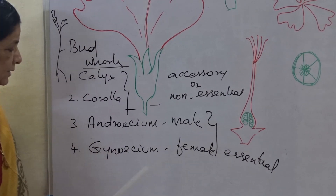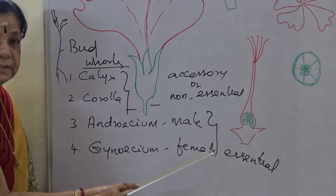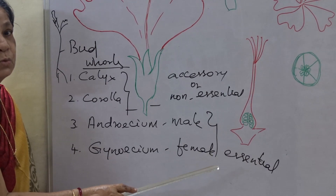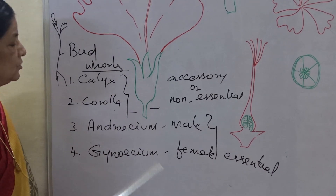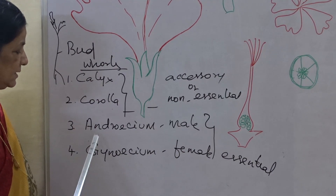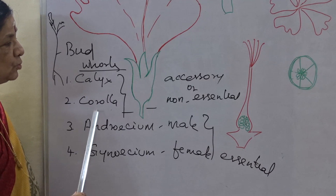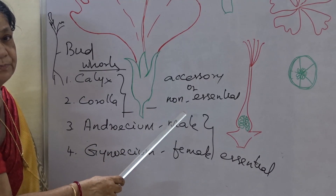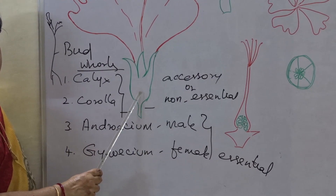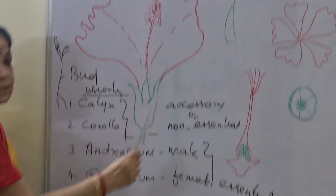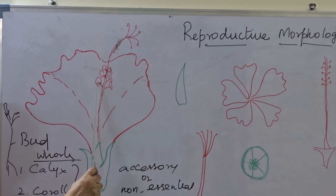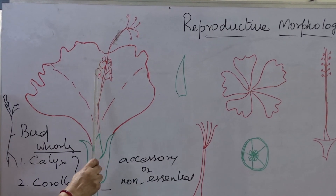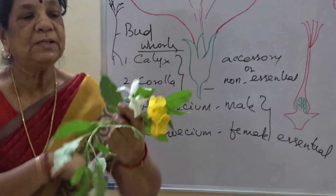In a given flower, just see the diagram — this is the calyx, this is the corolla, and inside the corolla is the androecium. Inside that is the gynoecium. Now I will show the flower — it's very small, just to help you understand. The flower in this plant is very small.